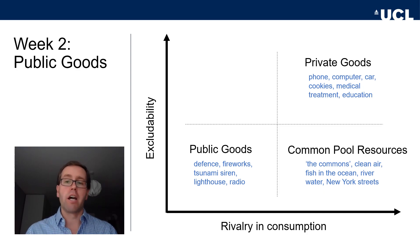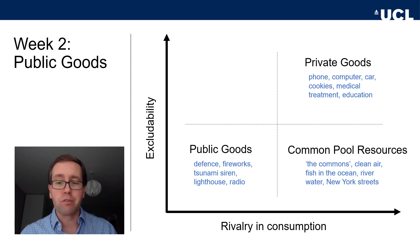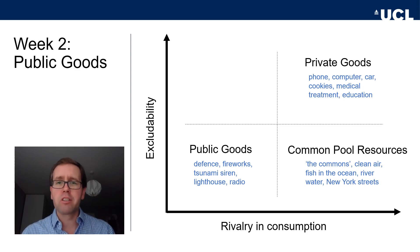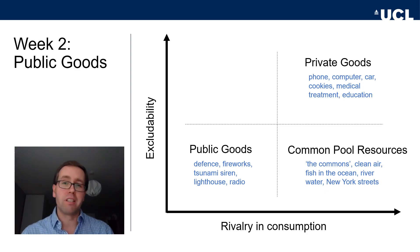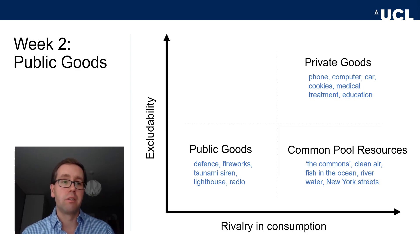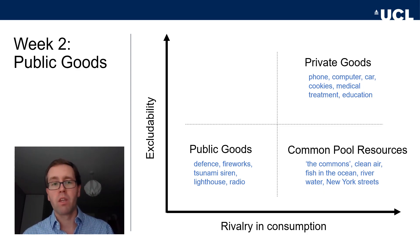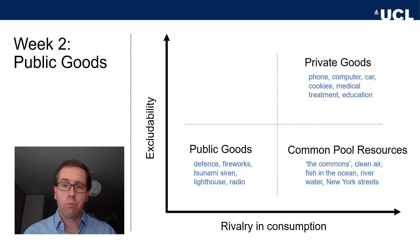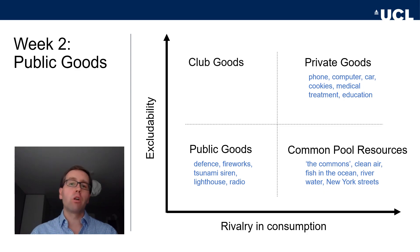New York streets are another common pool resource example — there is rivalry through congestion but it is difficult to exclude people. London is slightly different: it has a congestion charge scheme that tries to stop people from using the city center, or at least recover some of the cost of doing so.